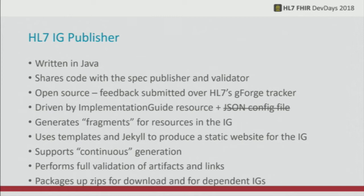The IG publisher is driven by both the implementation guide resource and currently a JSON configuration file. Its primary purpose is to take the various artifacts your implementation guide points to — terminologies, profiles, extensions, capability statements — and generate what we call fragments, which are little HTML snippets or sometimes PNGs, that you can embed in your implementation guide however you wish. It allows a great deal of flexibility — you don't have to have your implementation guides look like HL7's. It is an open source project and we're happy to entertain contributions.